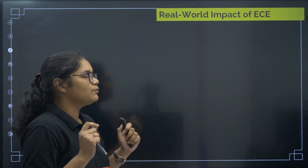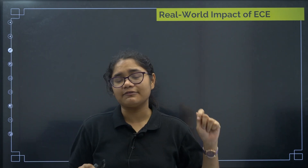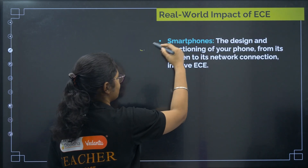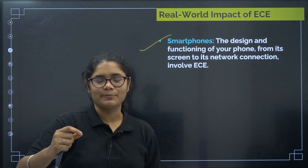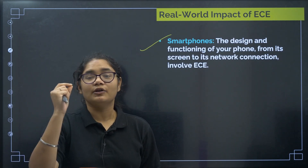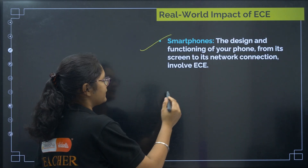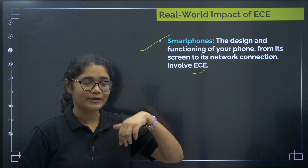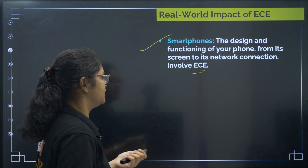Coming to the real-world impact — where in your daily life can you see Electronics and Communication Engineers at work? First is your smartphone. Everyone uses a smartphone today. These smartphones are designed by Electronics and Communication Engineers, starting from the screen to the network connection — everything is designed by them.